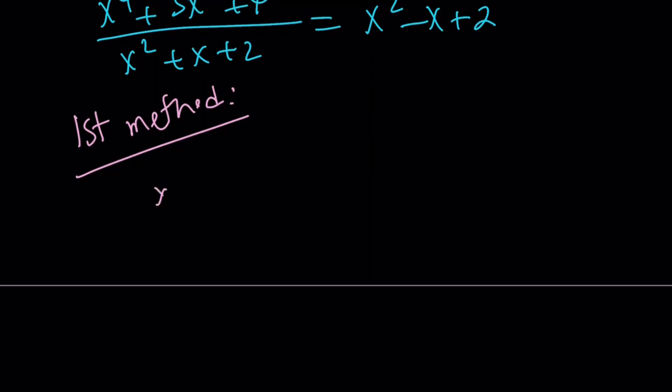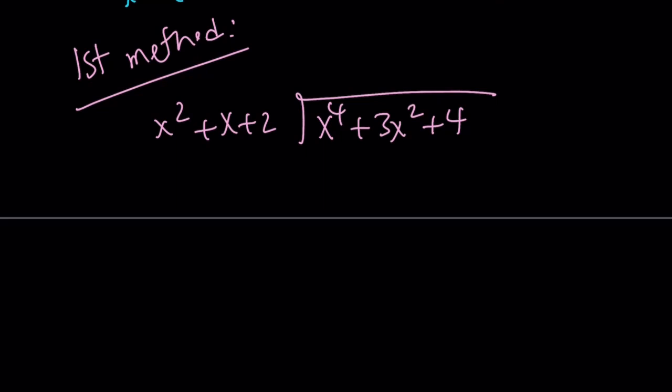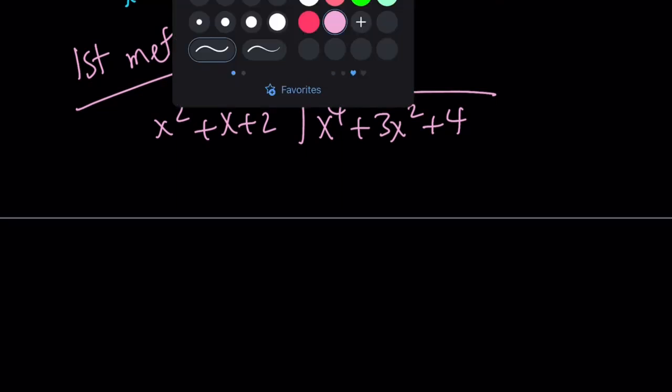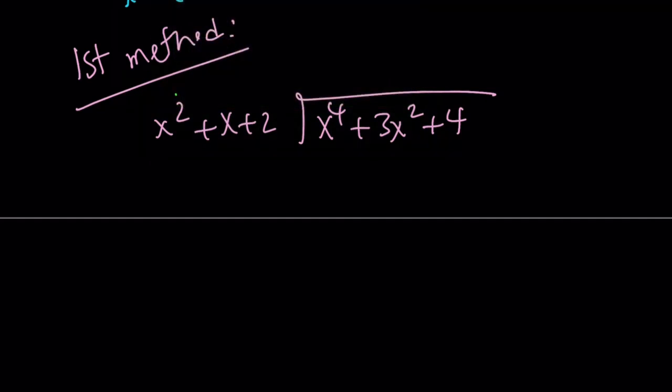We're going to divide. And I apologize if you're not familiar with this type of notation. But this is how we divide things here. We're going to divide x squared plus x plus 2 into x to the 4th plus 3x squared plus 4. That's why we write it this way. So x squared goes into x to the 4th how many times? Let's go ahead and find out. So in this division problem, we kind of check the highest degree terms. x squared goes into x to the 4th x squared times, right?